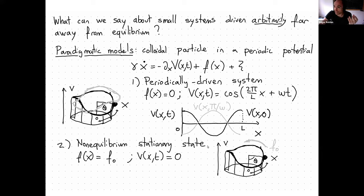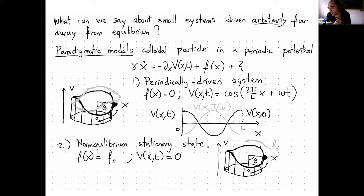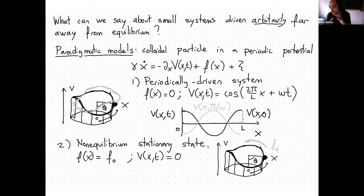Another way is having a non-equilibrium stationary state: the potential is fixed but you have an external force pushing the particle. You can have a ring and push the particle around it. Or you can have a more complicated setup, like two thermal baths in contact with one degree of freedom — for example, the x degree of freedom of the particle is at the cold temperature and y is at the hot temperature. This you can build in an experiment, and this is also a non-equilibrium stationary state.